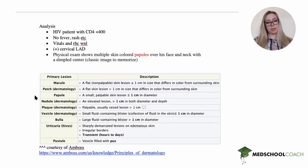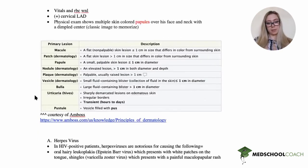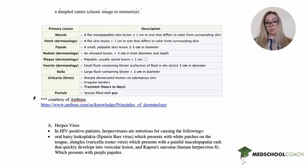Continuing on to our options. First option is herpes virus. In HIV-positive patients, a herpes virus might cause oral hairy leukoplakia from EBV, shingles from VZV, and then Kaposi's sarcoma which is HHV-8 with purple papules. Our patient has none of these, so we can exclude herpes virus.